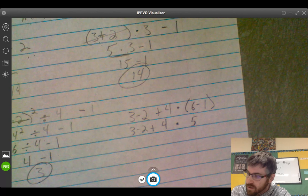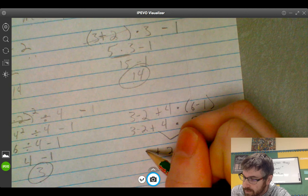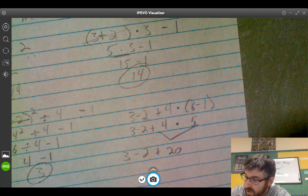What's next? Yep, you're right. Multiply. 4 times 5 is 20. Rewrite it. What's next? Add or subtract? You're right. We have to add first. 2 plus 20, you have 22.